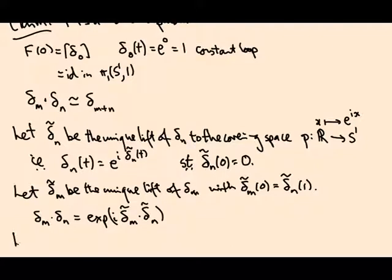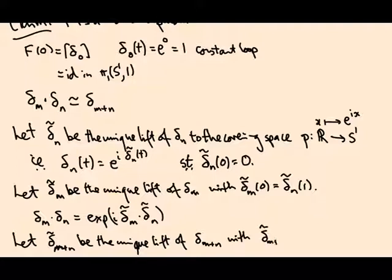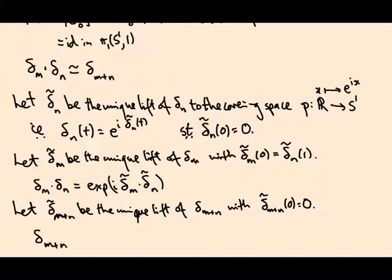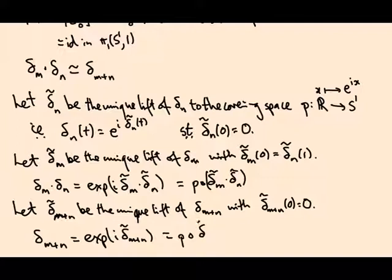Finally, I want one more lift. Let delta m plus n tilde be the unique lift of, surprise surprise, delta m plus n. So, what we know is then, delta m plus n is exp of i delta tilde m plus n. That's what it means to be a lift. But if you don't like exp, if you don't like i, you can just say this is p composed with this concatenation, and this is p composed delta tilde m plus n.